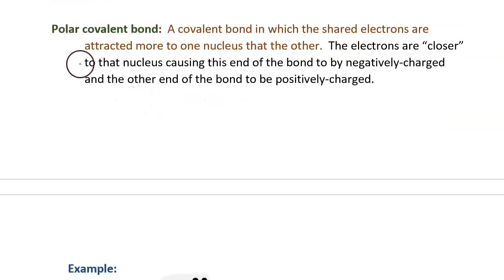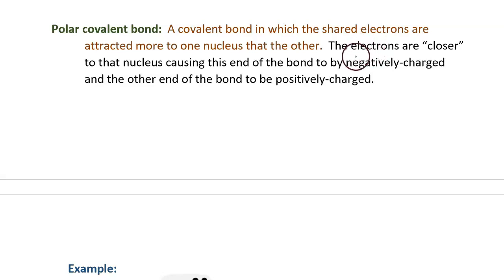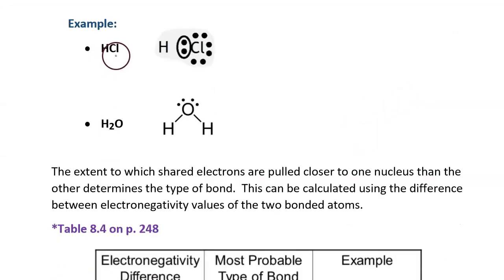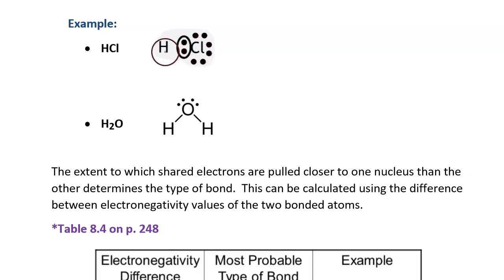Let's contrast that with a polar covalent bond. This is a covalent bond in which the shared electrons are attracted more to one nucleus than the other. The electrons are closer to that nucleus, causing that end of the bond to be negatively charged and the other end of the bond to be positively charged. For example, HCl — hydrogen chloride, or hydrochloric acid when dissolved in water. In the dot diagram, the shared pair of electrons is drawn closer to the Cl than to the hydrogen.